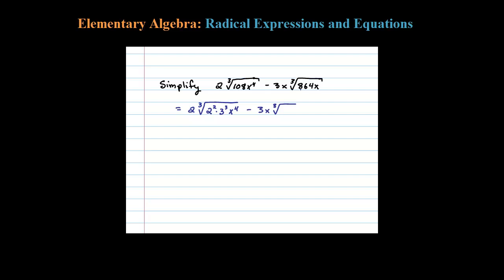Minus 3x times the cubed root. Now off to the side, 864 I found is 2 to the fifth times 3 to the third times that x. Okay, so off to the side I found the prime factorization.